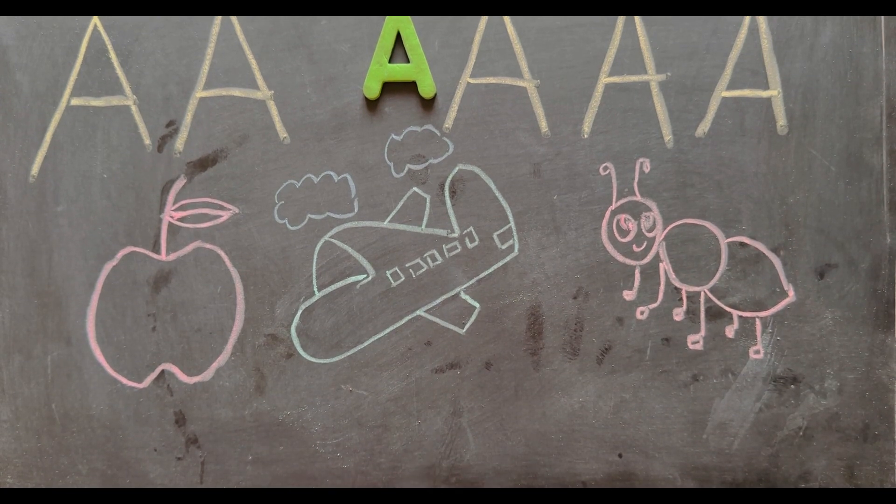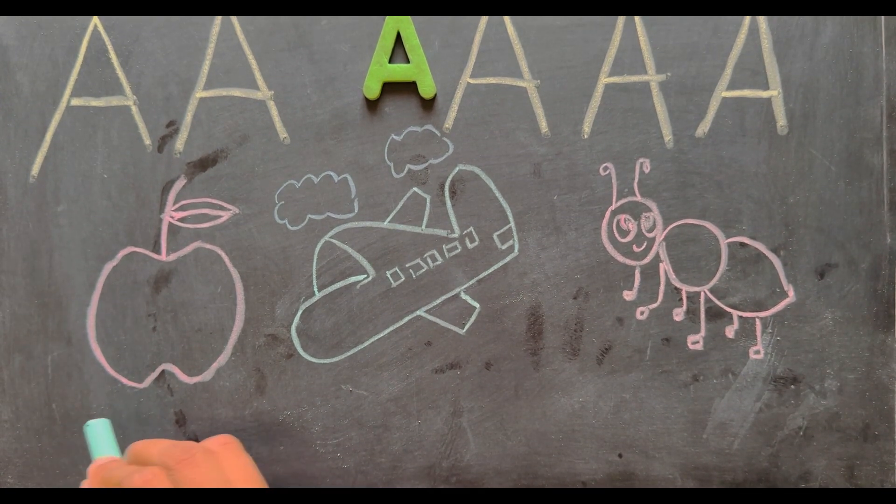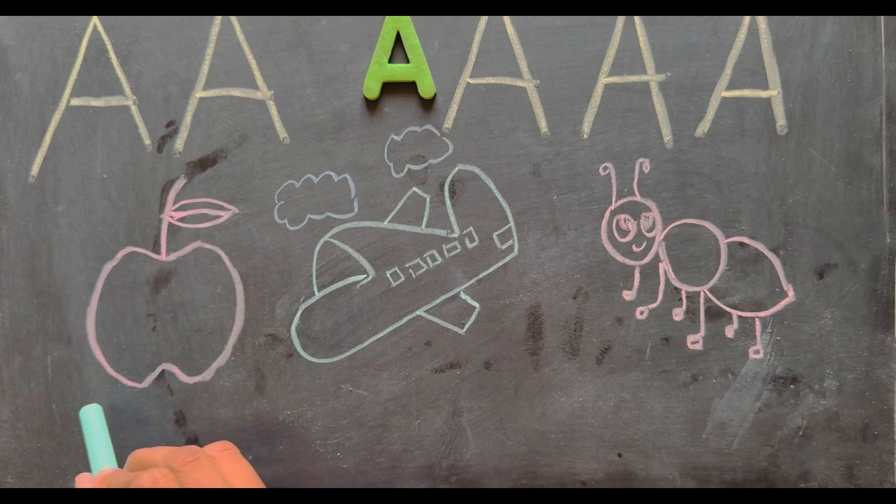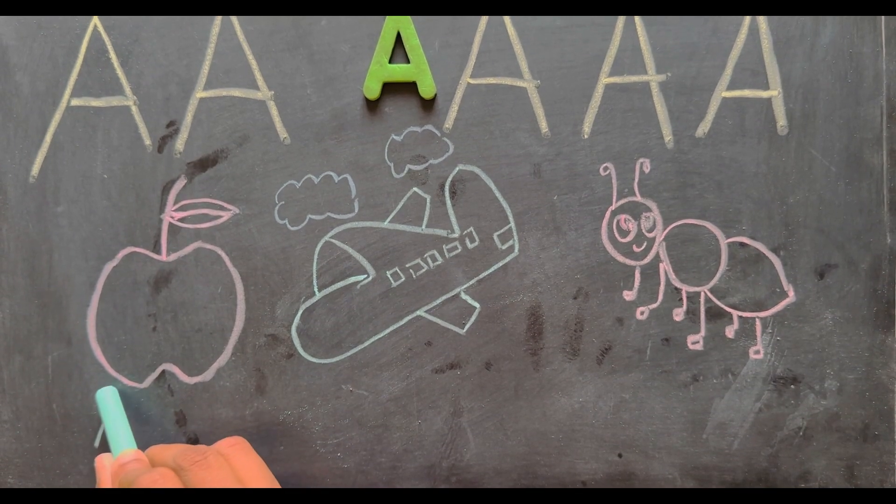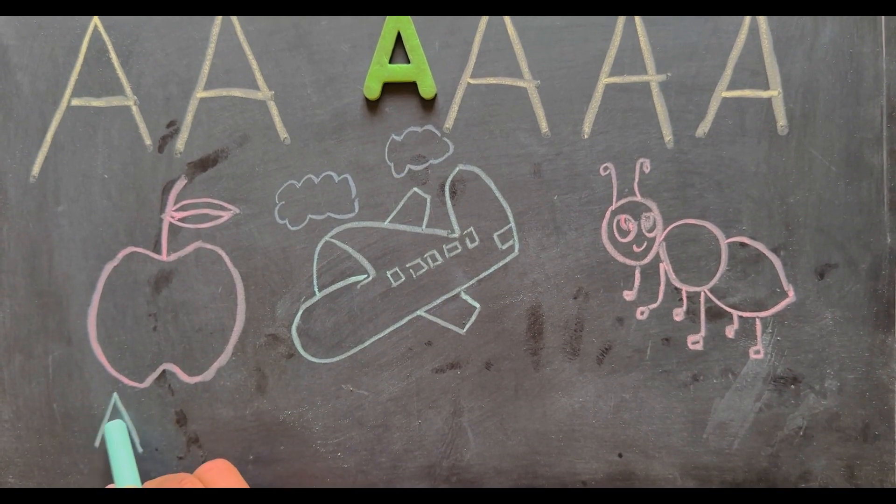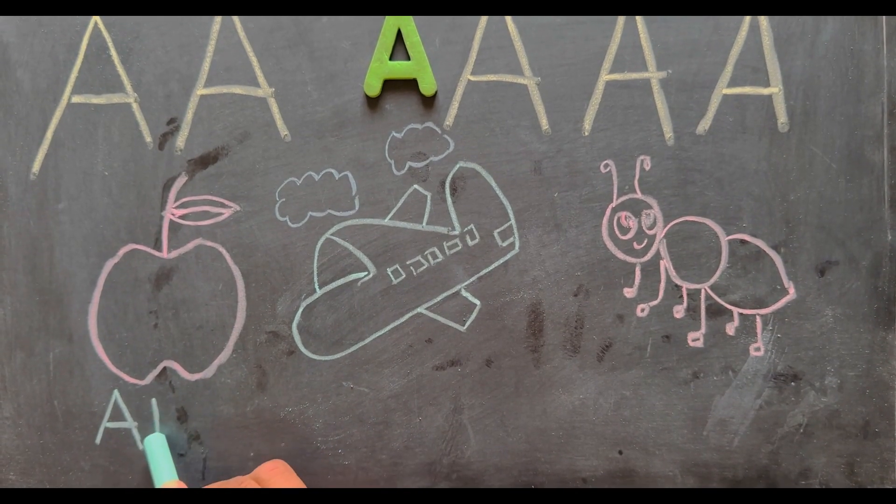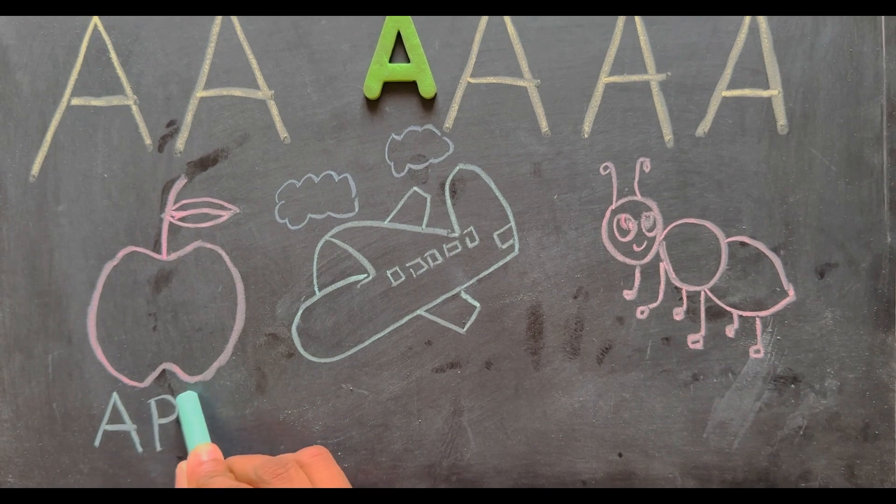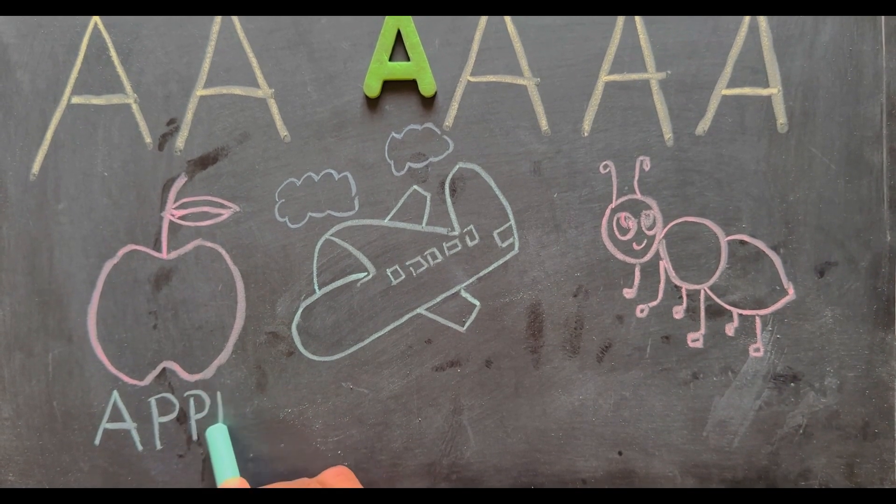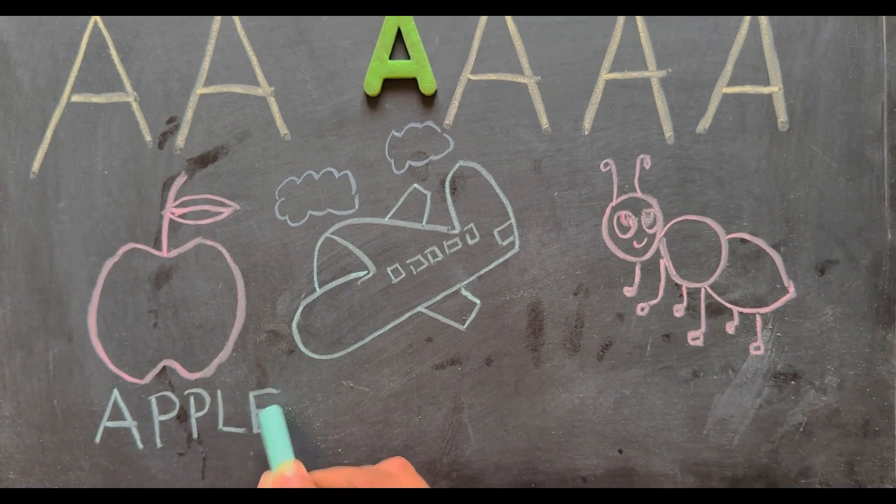Let's write the spelling for these images. What is this? Apple. Spelling: A-P-P-L-E. Apple.